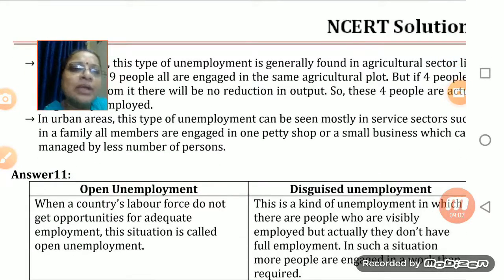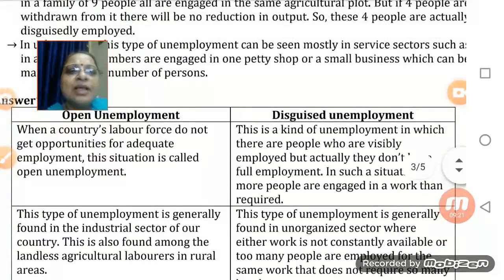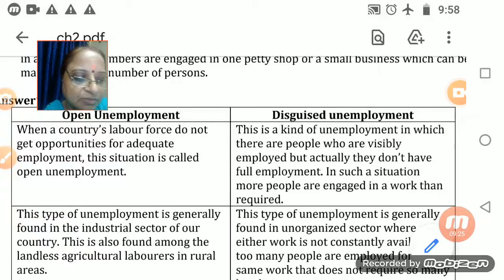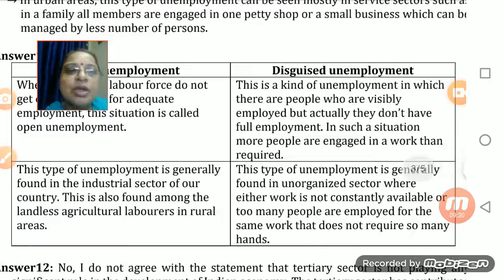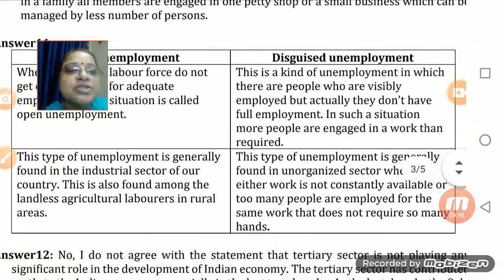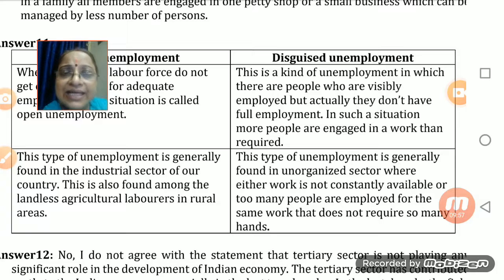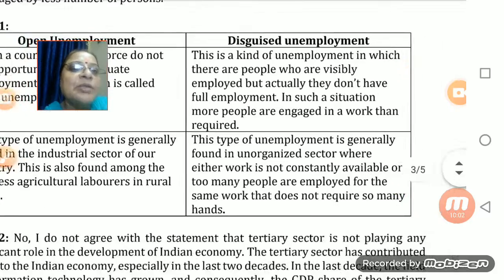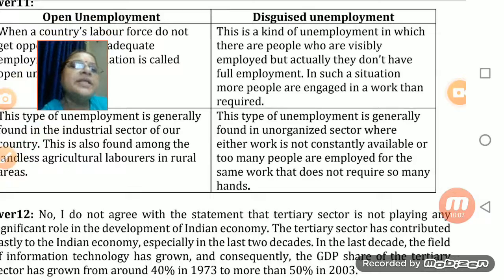In rural areas, disguised unemployment is common in agriculture — if nine people work on the same agricultural plot but four people's removal causes no reduction in output, those four are disguisedly unemployed. In urban areas, this occurs in family-run shops or small businesses with extra people. Open unemployment means the labor force does not get opportunity for adequate employment — generally found in the industrial sector and among landless agricultural laborers. Disguised unemployment is generally found in the unorganized sector.